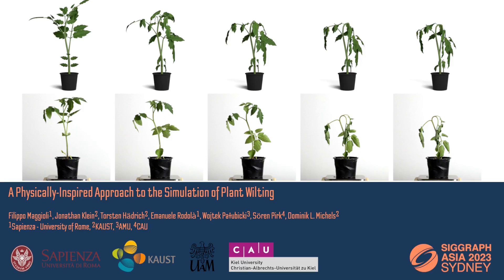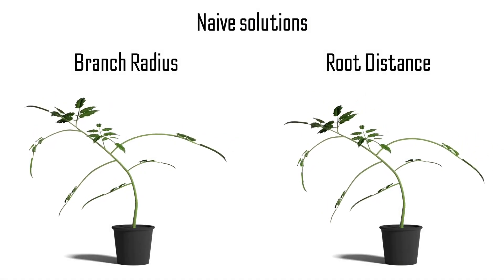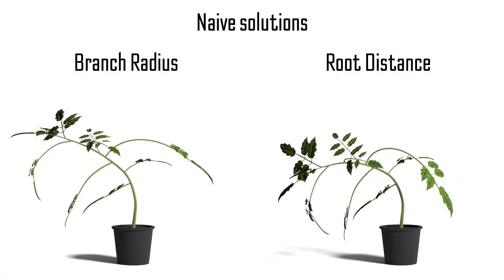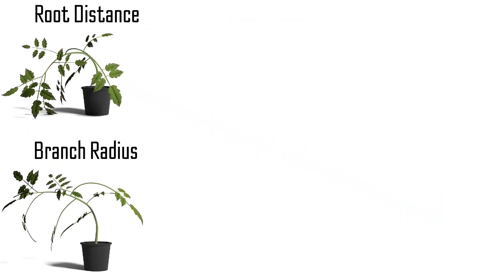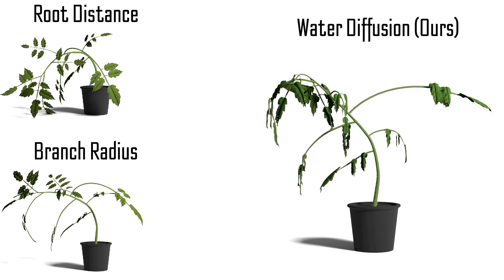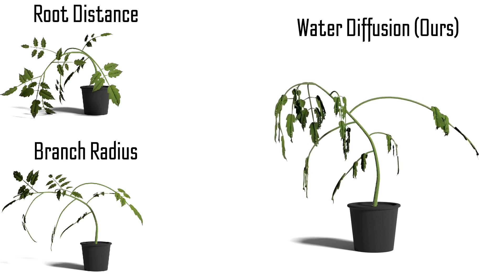We propose a new approach, inspired by biological processes for producing visually convincing simulations of wilting plants. Simulating the wilting process is a complex problem that cannot be solved convincingly with naive approaches. In contrast, we identify the water loss as the main driver of the wilting process and simulate it through a diffusion model.